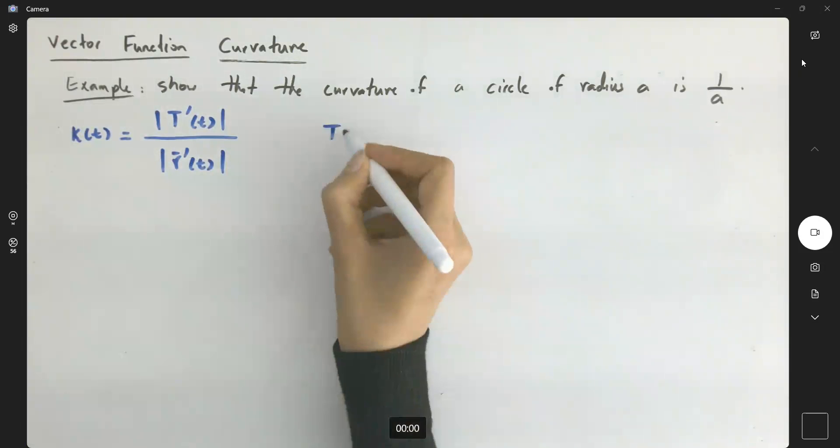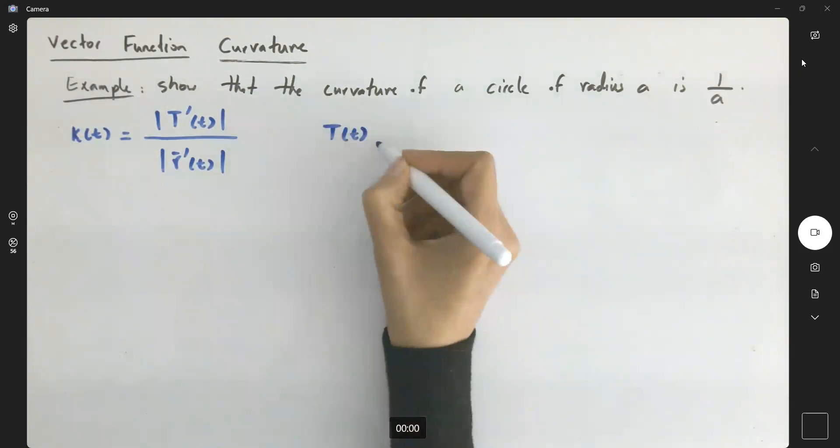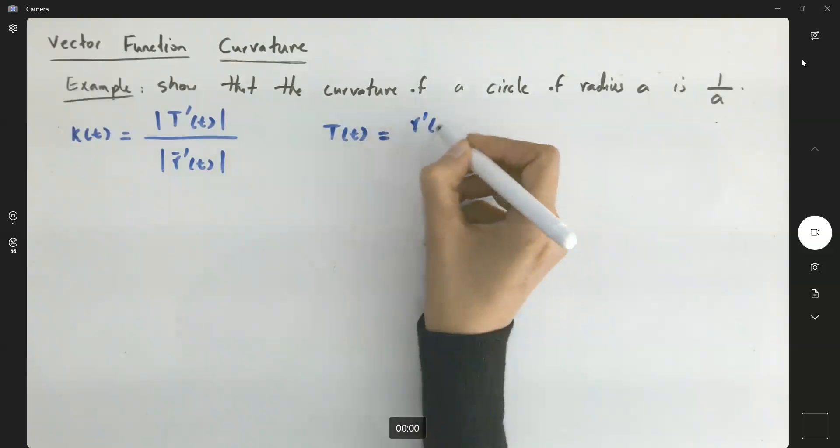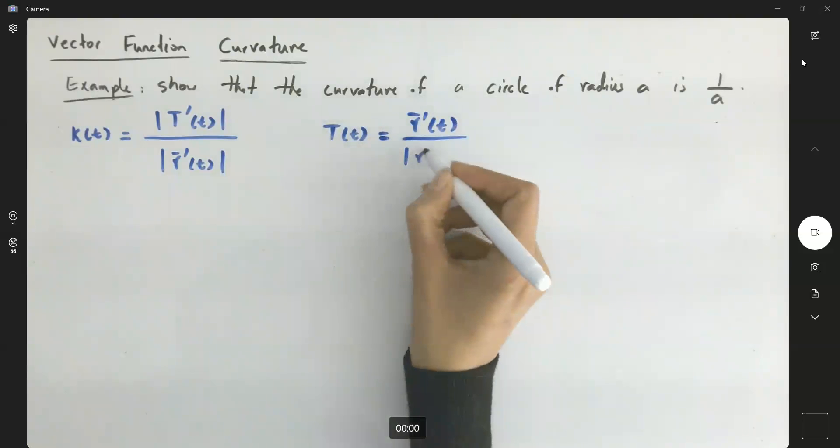And also, T of T, or the unit tangent vector, is equal to R prime of T divided by its magnitude.